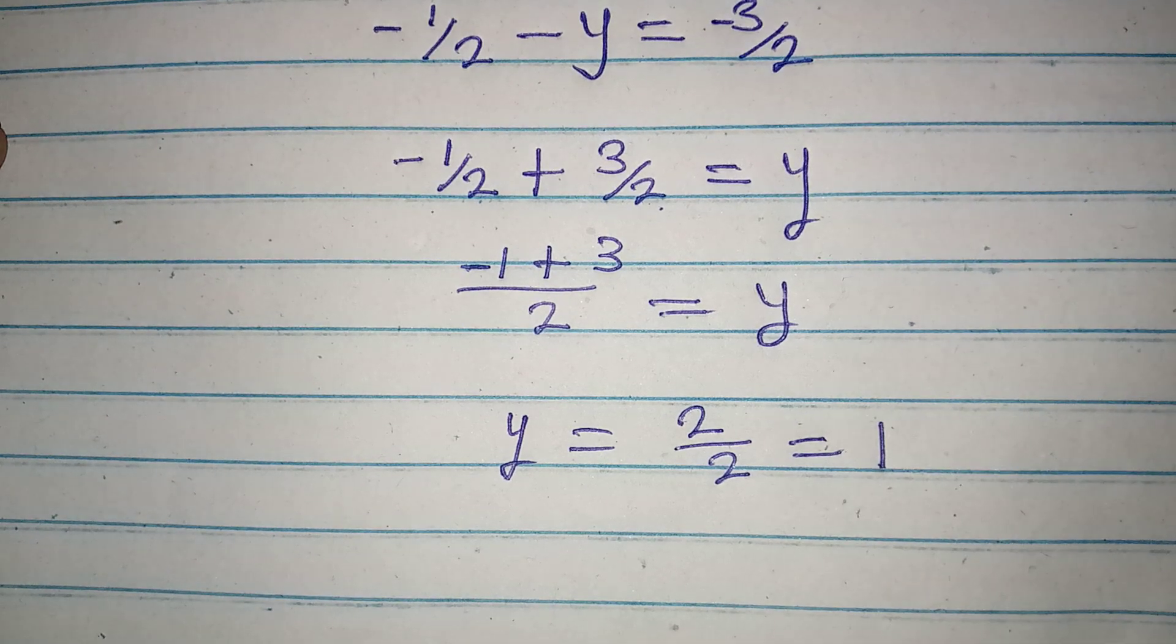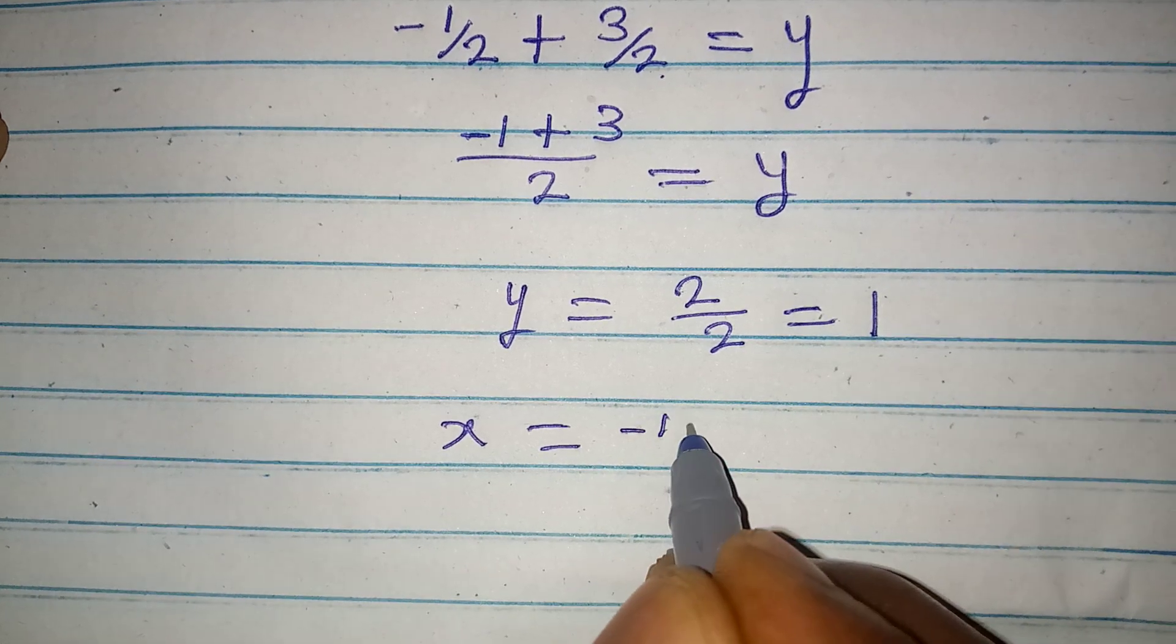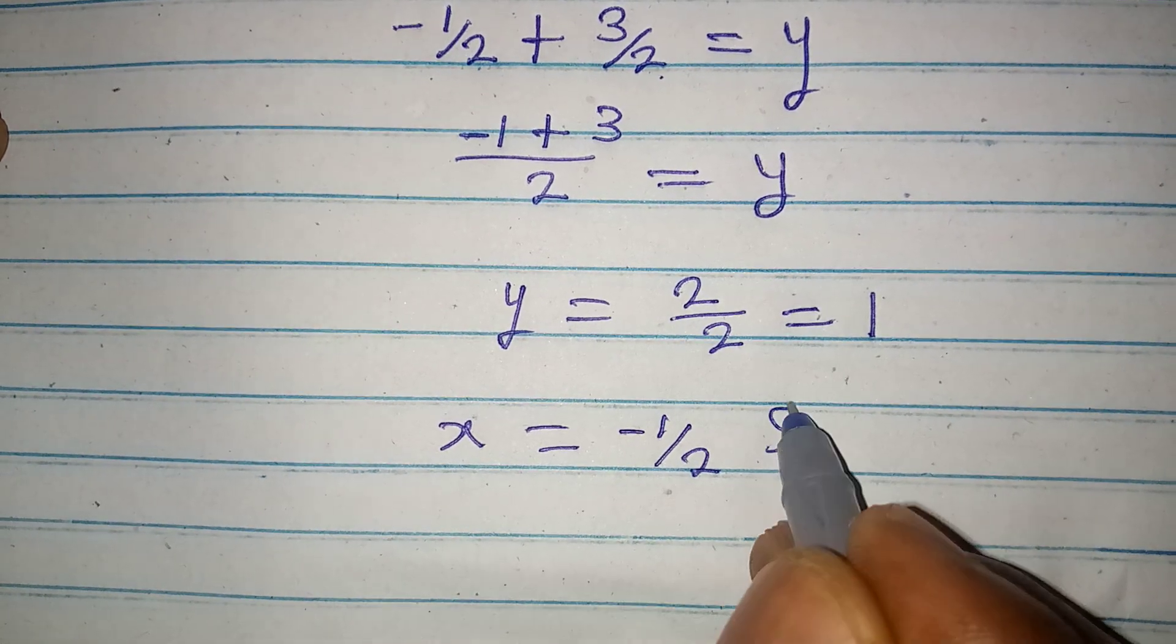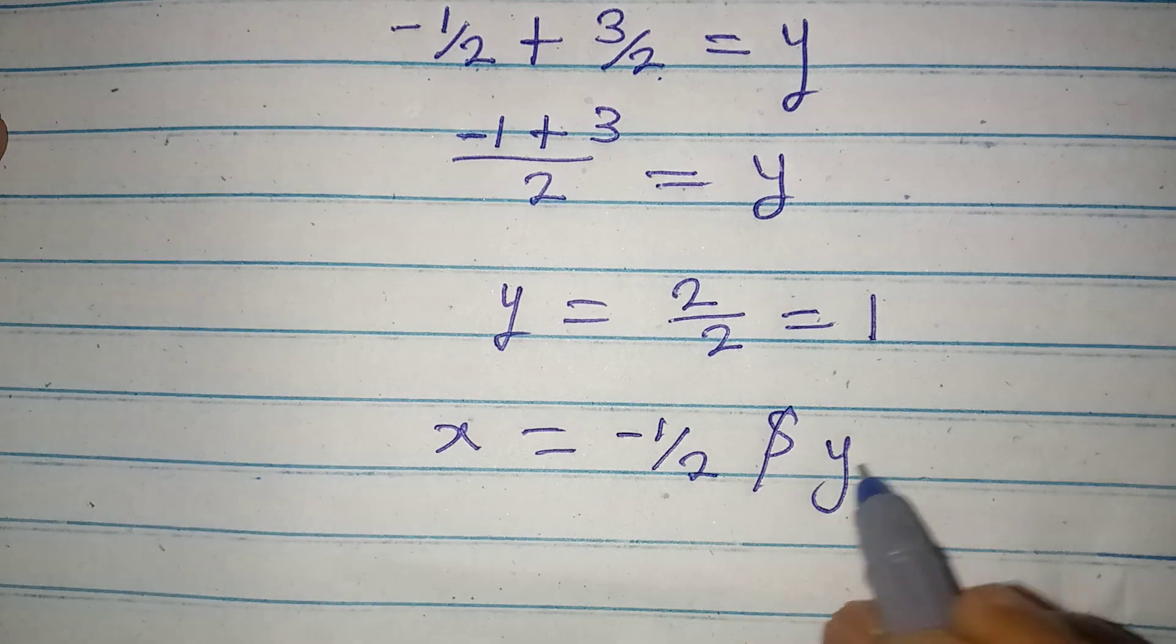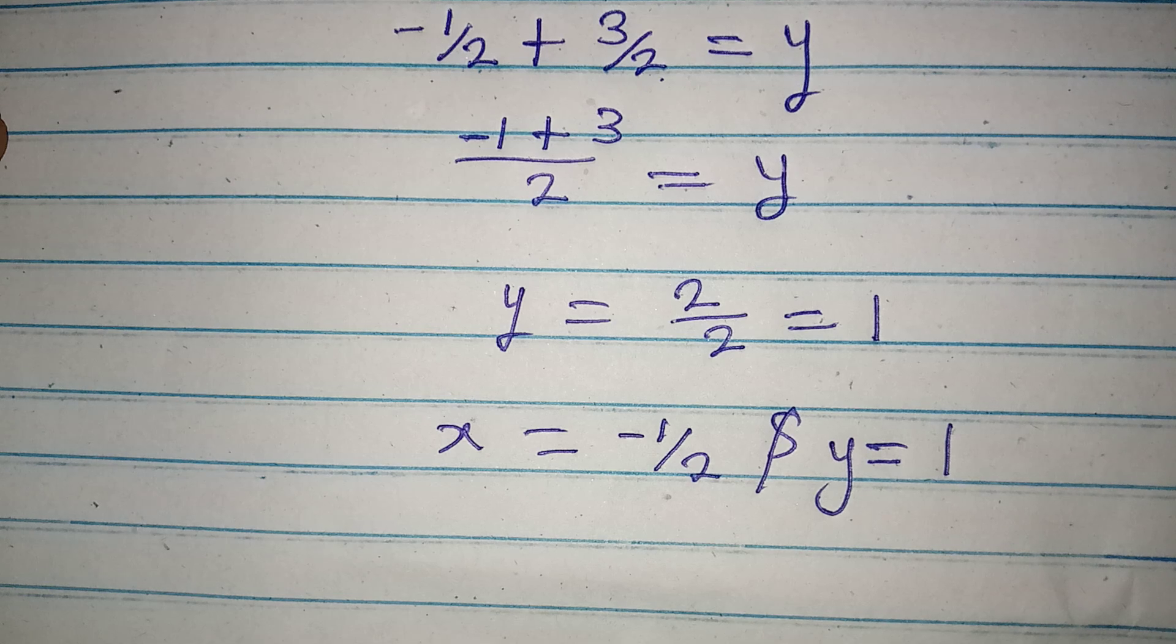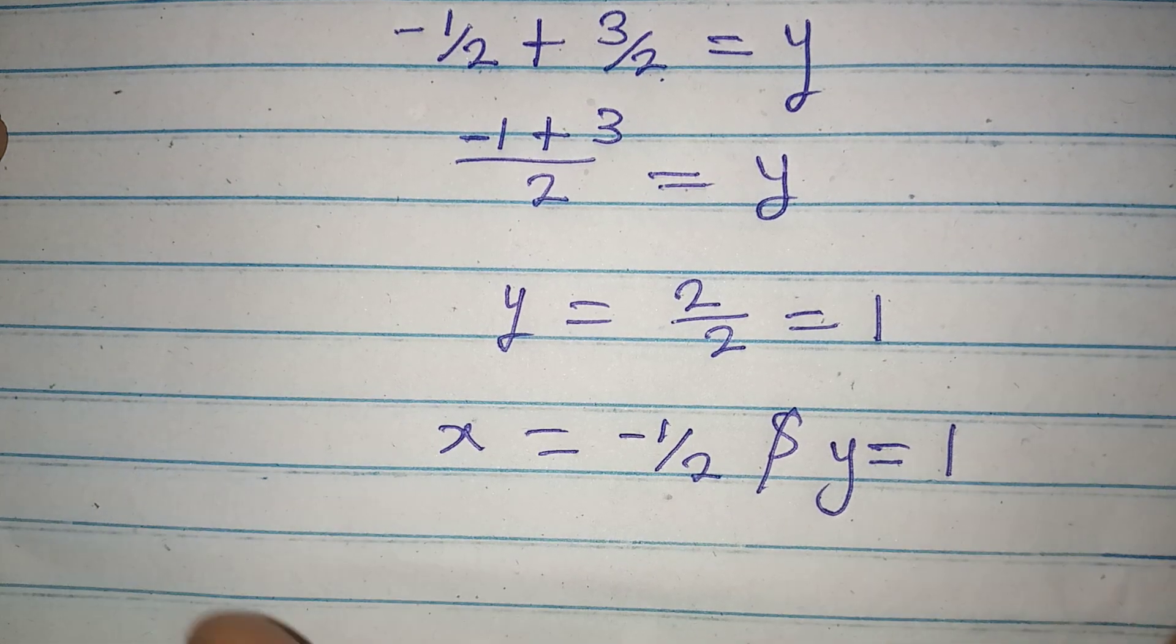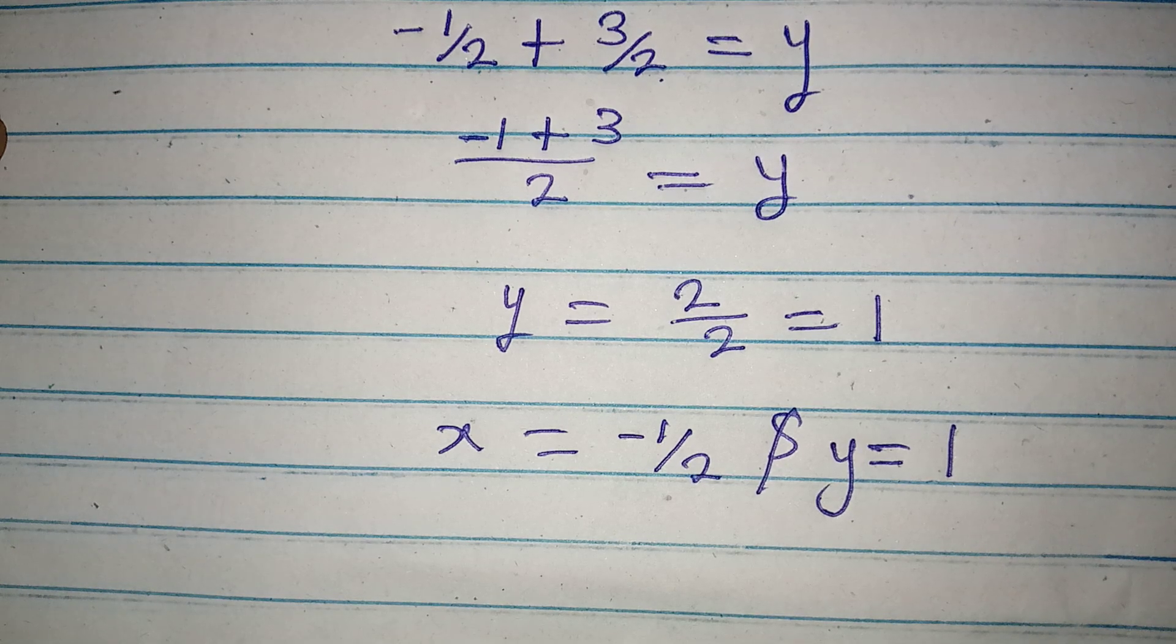So this is to say that our x is equal to minus 1 over 2, and y is equal to 1. And you can just go back and put this value into the equation. You will find out that you will be correct.